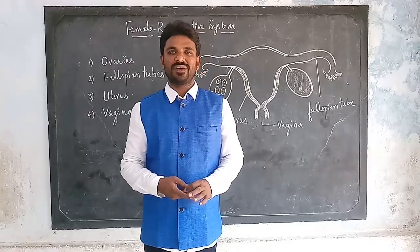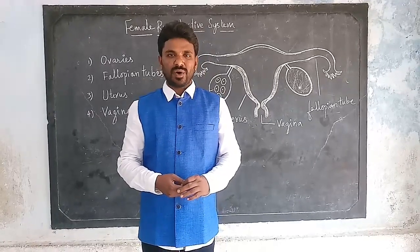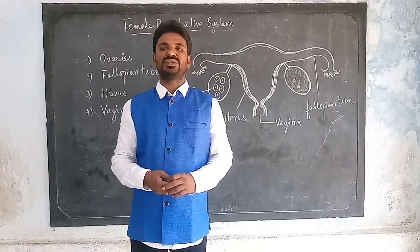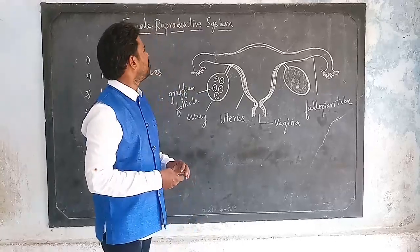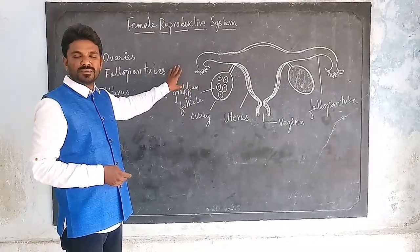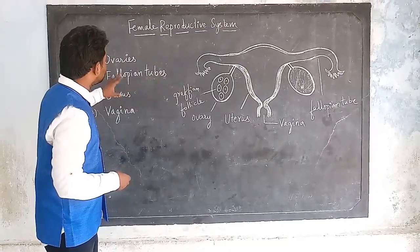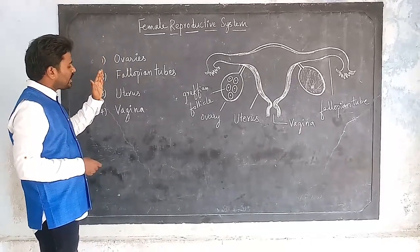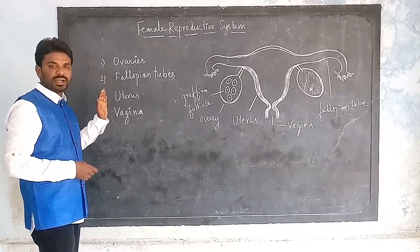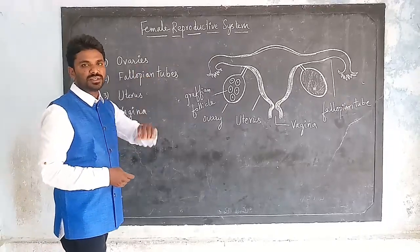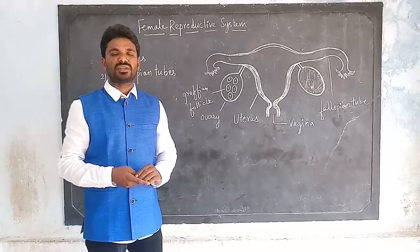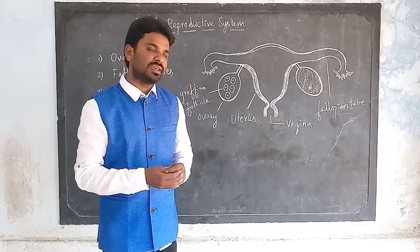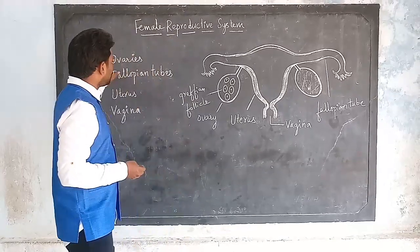Good morning. In this session I am going to explain about the female reproductive system. The parts of the female reproductive system are as follows: ovaries, fallopian tubes, uterus, and vagina. Let's discuss all the parts clearly.